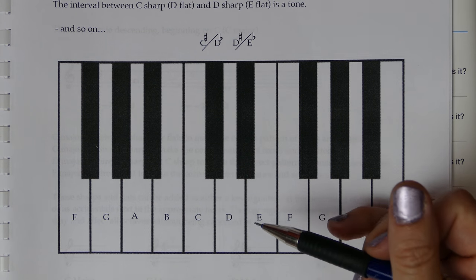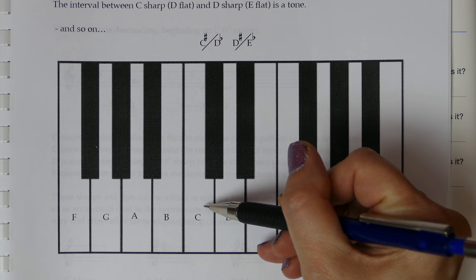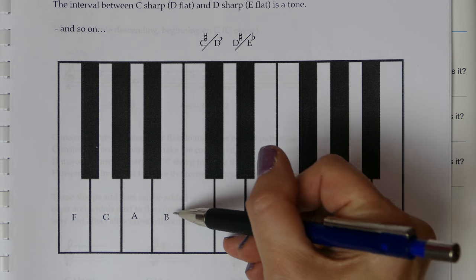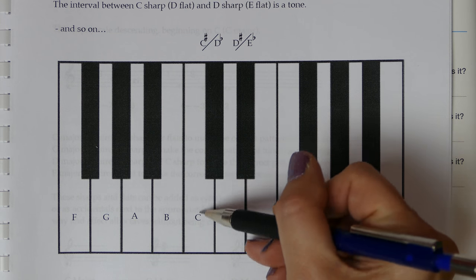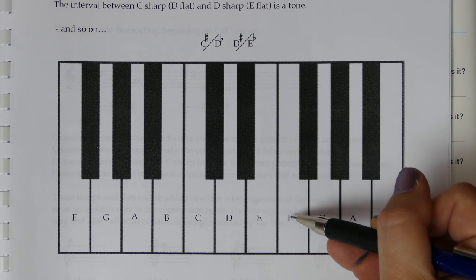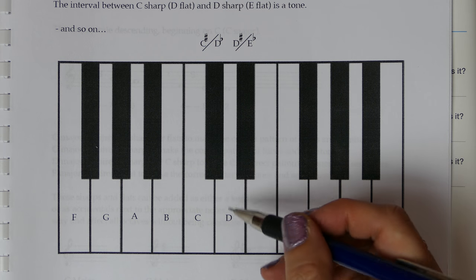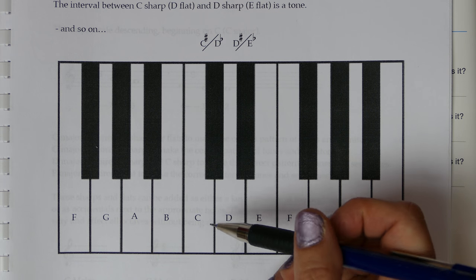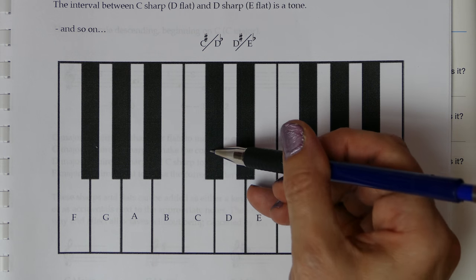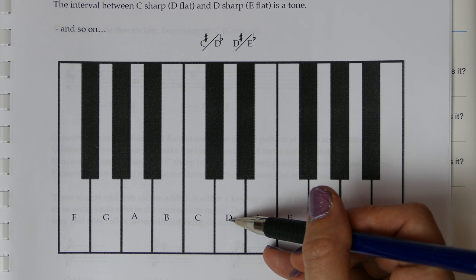In its simplest form a semitone is the absolute next-door note on a piano so whether it's a black note or a white note. The absolute next-door notes on this piano keyboard represent a semitone or a half step and so a full step or a tone is just two halves so half half that would be our full step or our full tone.